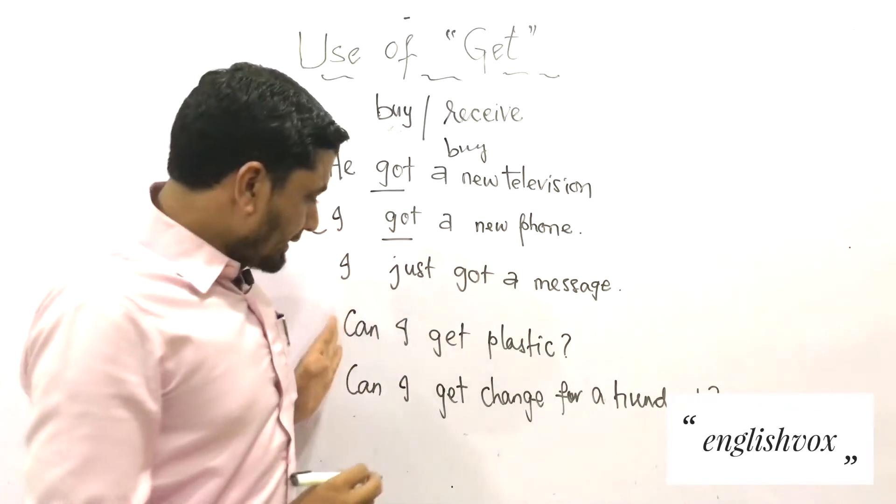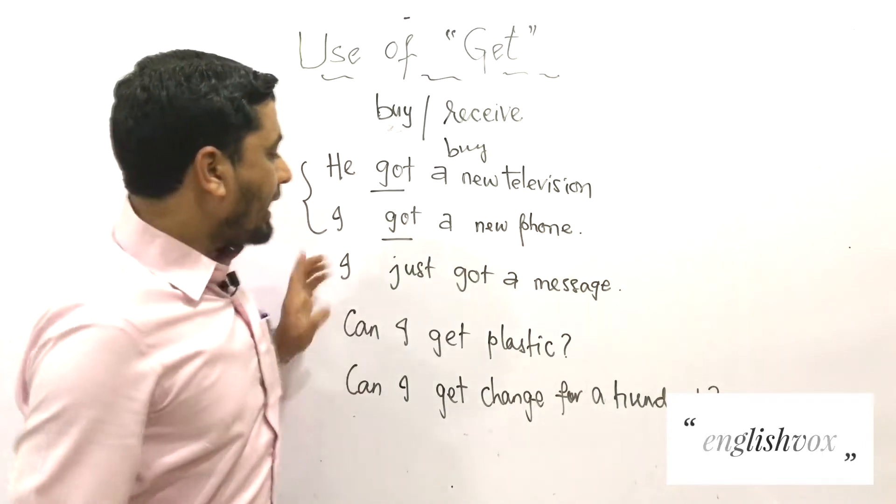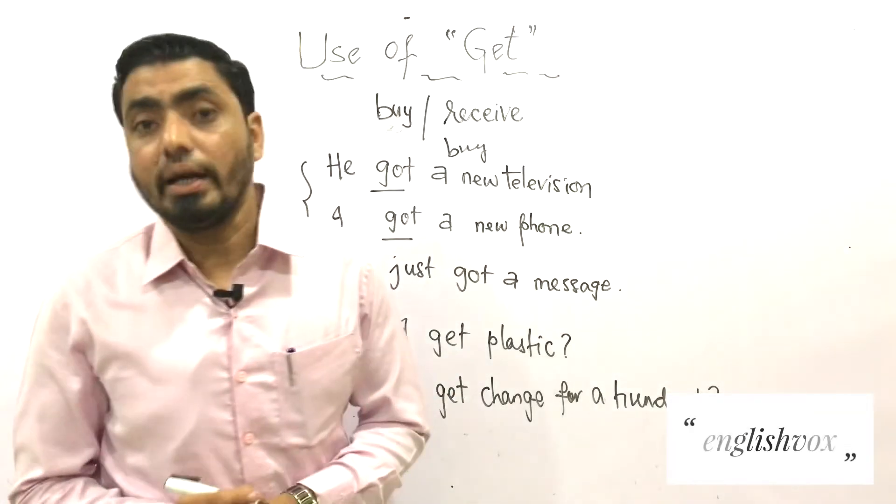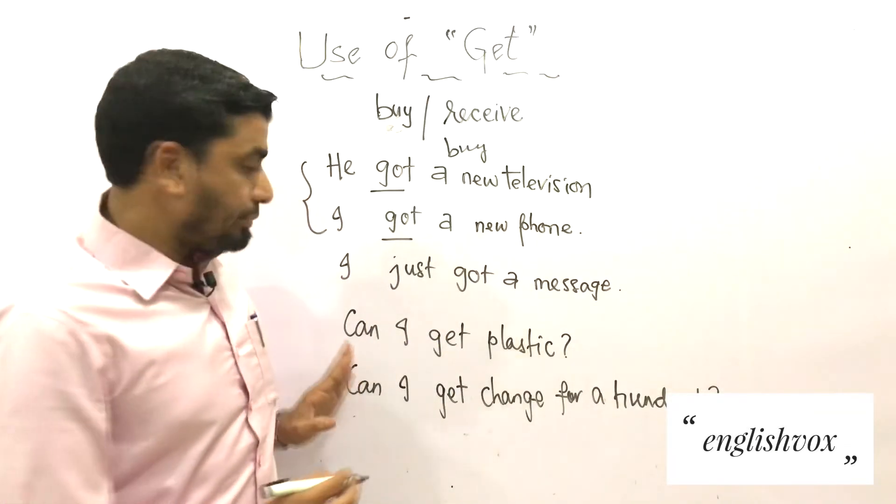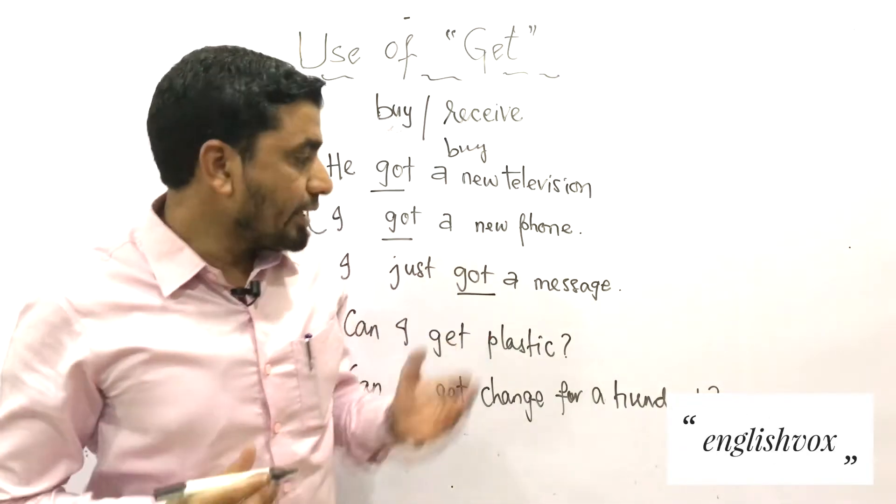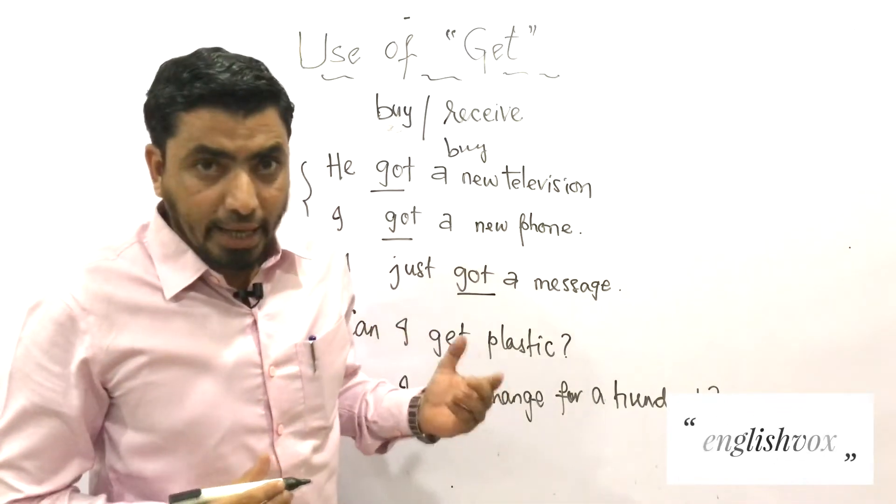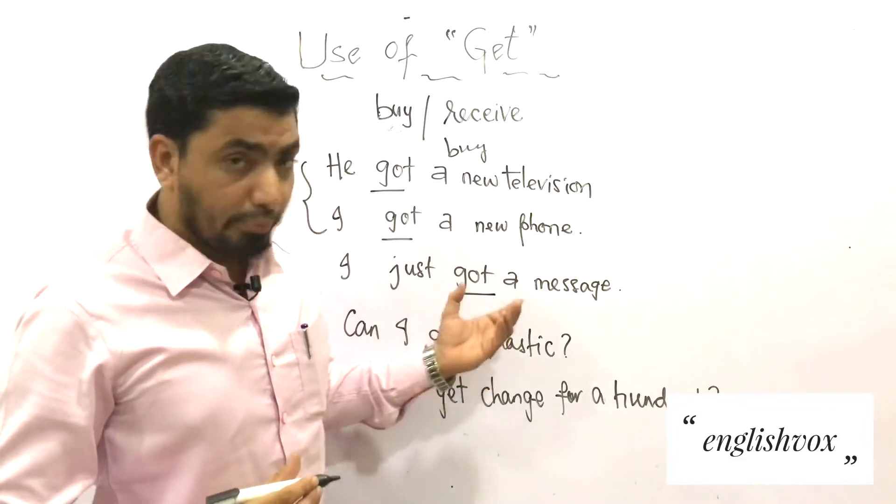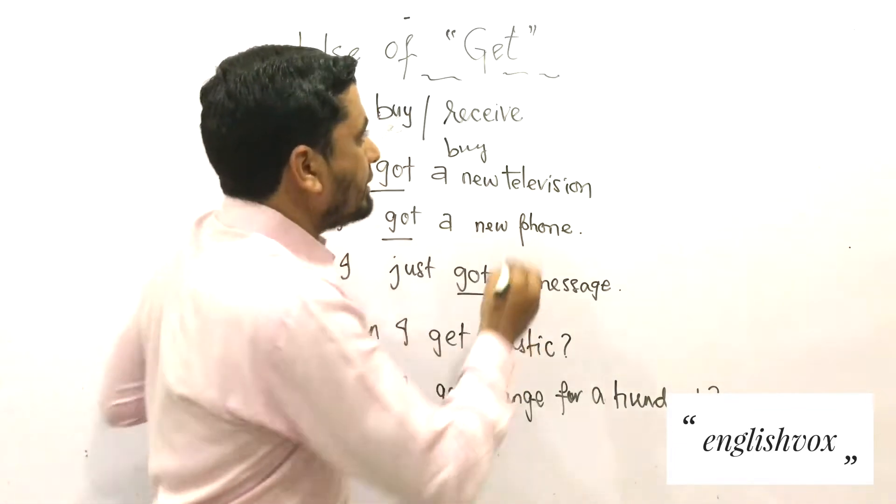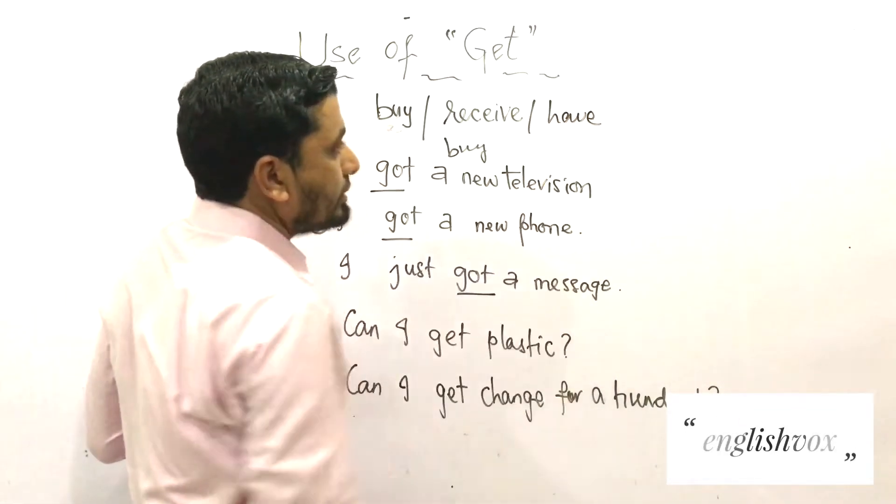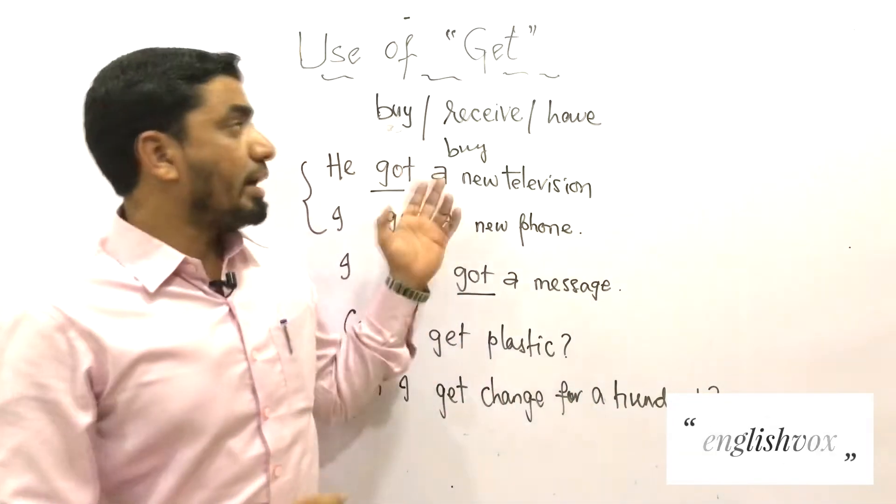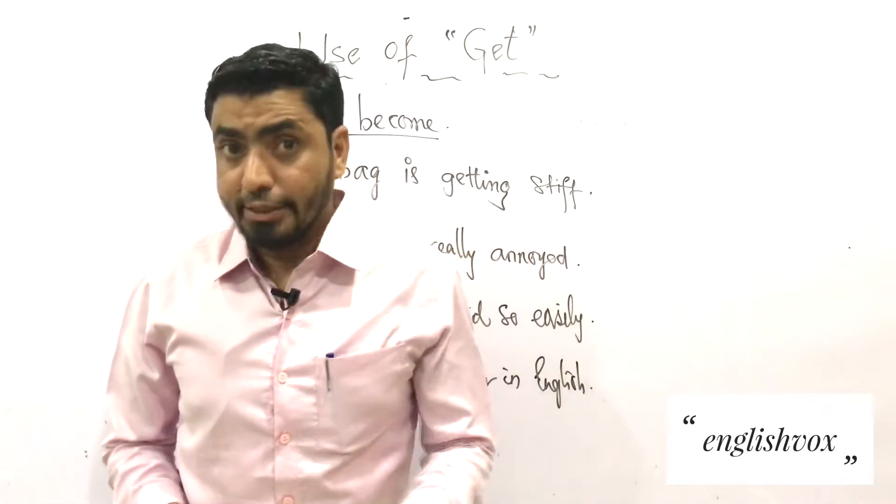But look at these remaining examples. 'I just got a message', 'Can I get plastic?', and 'Can I get change for a hundred?'. Here in these three examples, 'get' is giving the meaning of 'receive'. It means 'I just received a message', 'Can I receive or have plastic?', and 'Can I have change for a hundred?'. So you can also say it is used to show having or possessing something. These were the examples where 'get' is giving the meaning of buy, receive, or have.